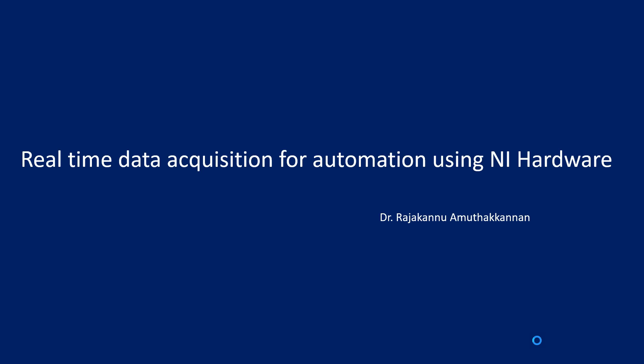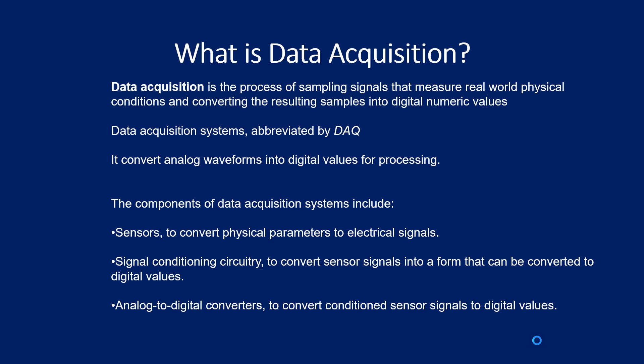What is meant by NI Hardware? National Instruments Hardware. What is data acquisition? Data acquisition is the process of sampling signals that measure real-world physical conditions and converting the resulting samples into digital numeric values. For example, if there is an analog signal coming from a sensor, it will be transferred into digital numerical values in a computer. Data acquisition system, abbreviated as DAQ, converts analog waveforms into digital values for further processing.